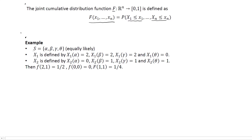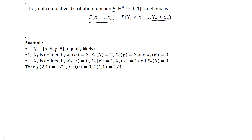Consider a sample space S containing alpha, beta, gamma, and theta, with each outcome equally likely, giving us a probability measure. We define two random variables: x1 maps alpha to 2, beta to 2, gamma to 2, and theta to 0; while x2 maps alpha to 0, beta to 1, gamma to 1, and theta to 1. From this definition we can compute both the joint PMF and the joint CDF.